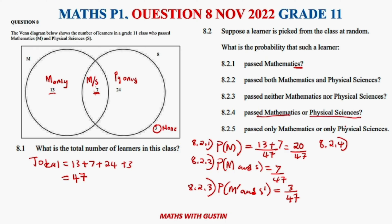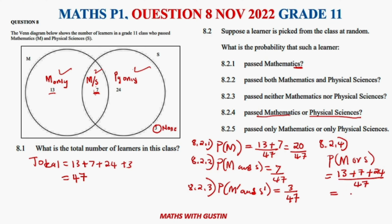Question 8.2.4 asks for those who passed Mathematics or Physical Science. This refers to everyone inside the Venn diagram — those who passed Maths only, those who passed both, and those who passed Physical Science only. That is 13 plus 7 plus 24, all divided by 47, giving us 44 over 47.